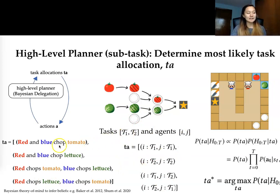So the task you could imagine for instance to be chop tomato, where red and blue are chopping the tomato together. This is what the task allocation would look like and the similar pattern follows.